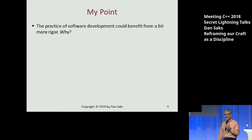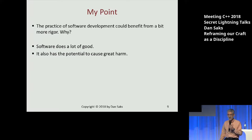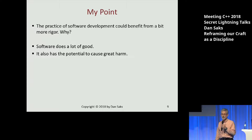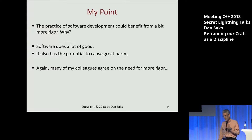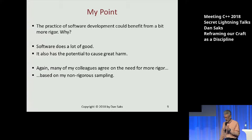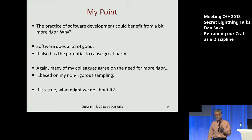My point is that I think there's general agreement that we could stand for a little bit more rigor. It's worth pausing to ask why. Software does a lot of good, but we're also seeing that it can do immense amounts of harm. Human beings don't react until there are emergencies — and there's going to be one someday, and that's going to be a real eye-opener. The hope is that more rigor will head that off or mitigate it. And even that assessment is based on a non-rigorous sampling of the pool. So if it's true, what might we do about it? Here's my suggestion.